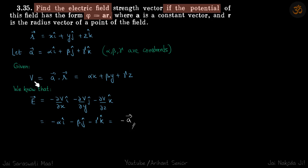So, let's do that. V is a dot r. And you will get alpha x plus beta y plus gamma z. This is the potential at any point x, y, z.